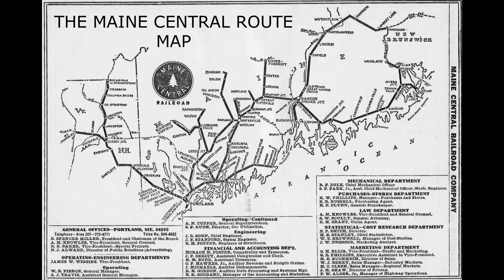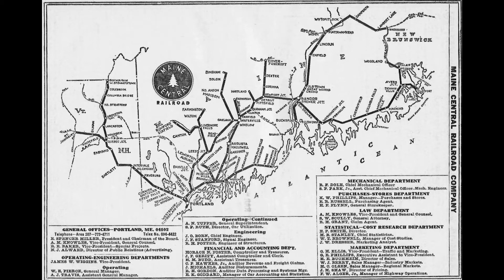Most of the traffic for the Maine Central came through Portland, Maine. To the west was the line called the mountain division that went up to St. Johnsbury, Vermont, and to the east of there was most of the rest of the Maine Central system.